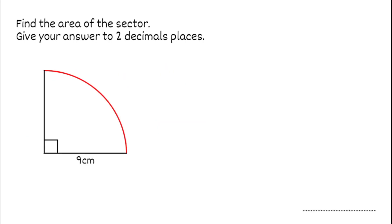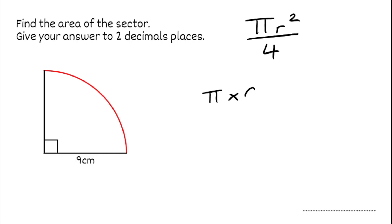We're going to do a very similar thing for this question. We've got to find the area of the sector, giving our answer to two decimal places this time. We've got a right angle — 90 degrees of this entire circle — and we know in an entire circle there's 360 degrees, so fractionally we've got a quarter. To find the area of this sector I'm going to use pi r squared and then divide by 4. Substituting in, we've got pi times 9 squared divided by 4. 9 squared is 81, so this is 81 pi divided by 4.